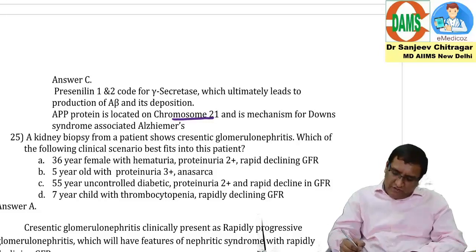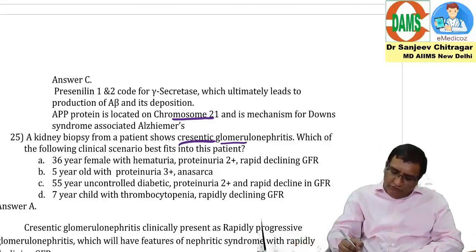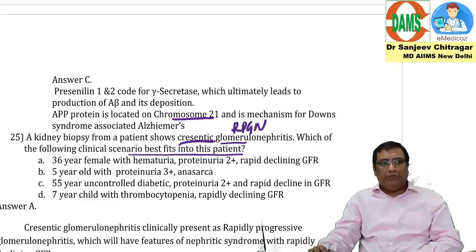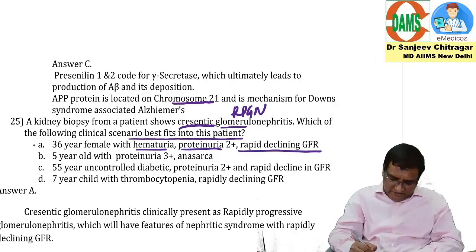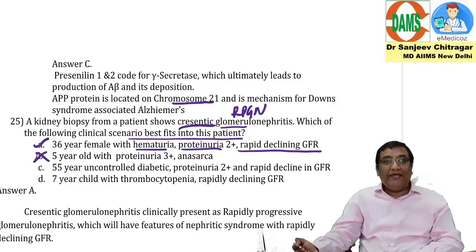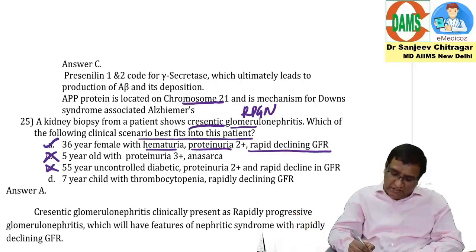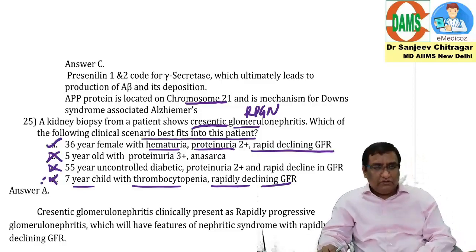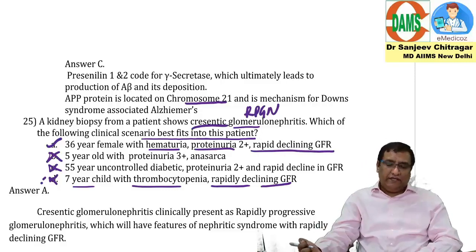Question 25: a kidney biopsy shows crescentic glomerulonephritis. Which clinical scenario fits? Crescentic GN is a form of RPGN. The correct answer is option A: a 36-year-old female with hematuria, proteinuria, and rapidly declining GFR. Option B is nephrotic syndrome. Option C is diabetic nephropathy. Option D — seven-year-old with thrombocytopenia and rapidly declining GFR — suggests TTP/HUS. So the answer is RPGN presenting with hematuria, proteinuria, and rapidly declining GFR.